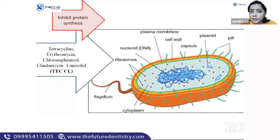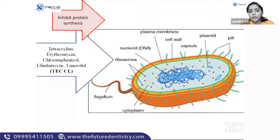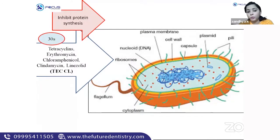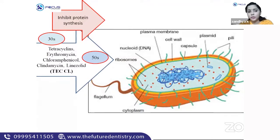Whenever there is penicillin, there will be cephalosporin; similarly, whenever there is tetracycline, chloramphenicol will be there. Both act on the ribosome and inhibit protein synthesis. Tetracycline acts on the 30S ribosome, whereas chloramphenicol acts on the 50S ribosome — that is the key difference.